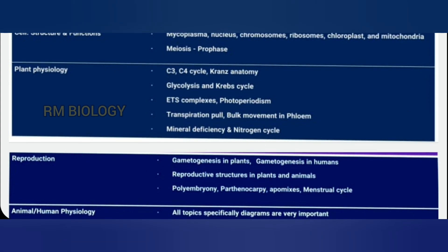Plant physiology: C3 and C4 cycles, Kranz anatomy, glycolysis, Krebs cycle, ETS complexes, photoperiodism, transpiration, bulk movement in phloem, mineral deficiency, and the nitrogen cycle.